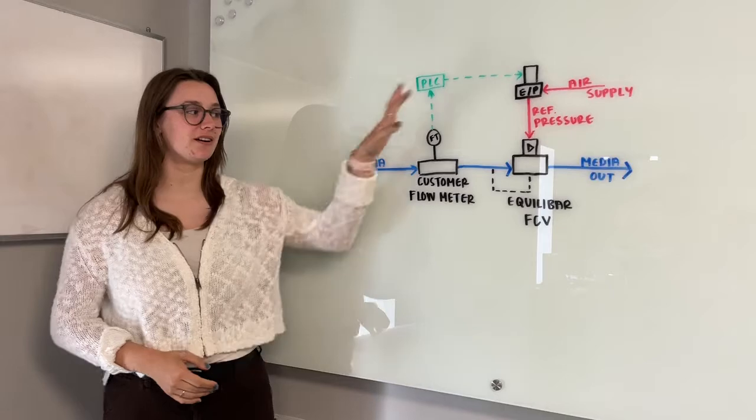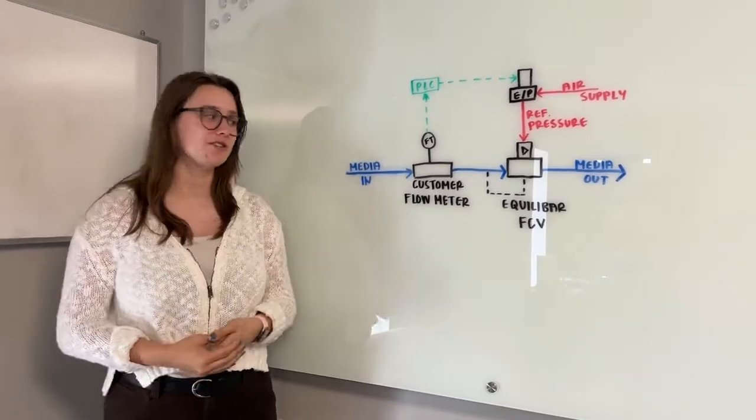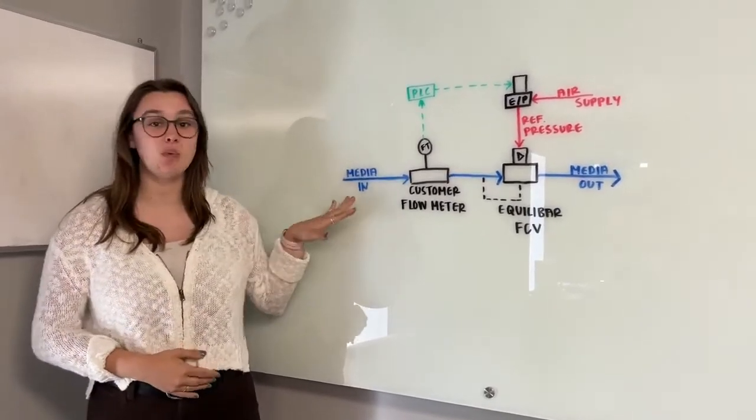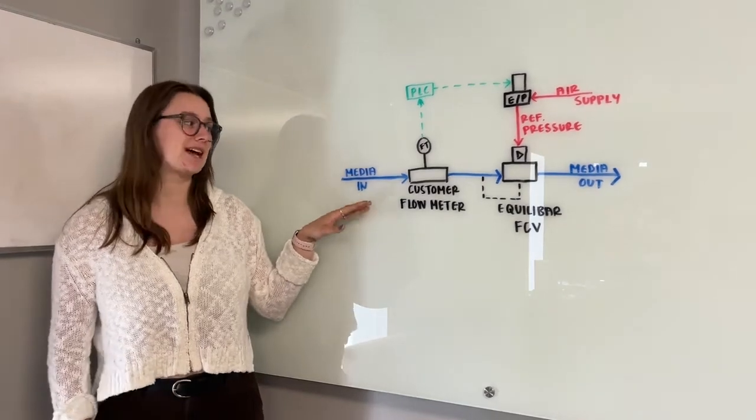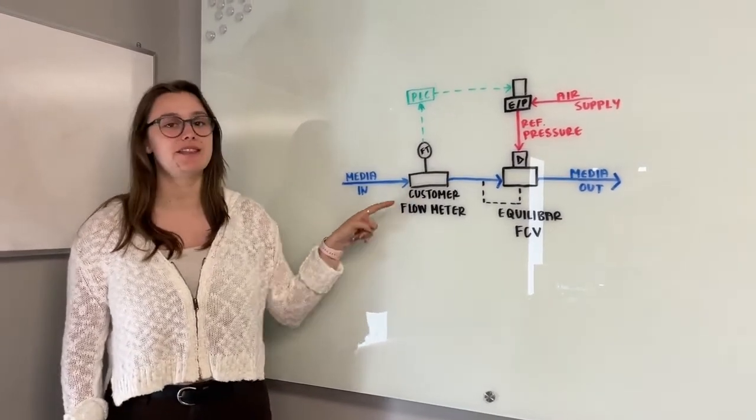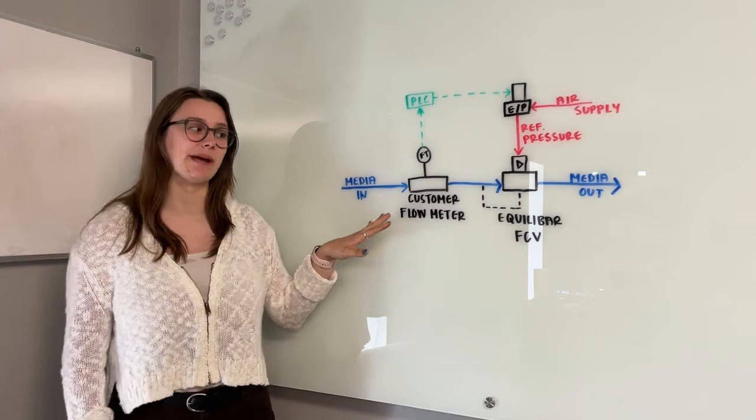So here's a schematic you can find on our getting started with flow control page. In our demonstration we will have water coming in at about 40 psi going through our flow meter, in this case an Endress+Hauser ProMass 63.